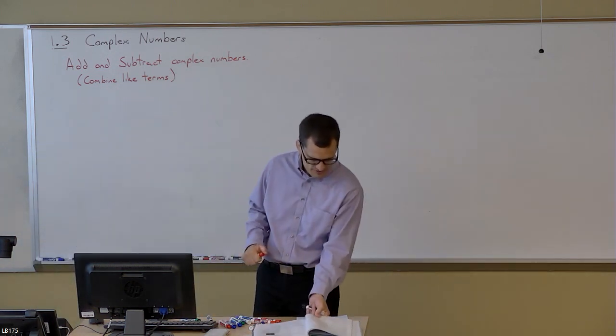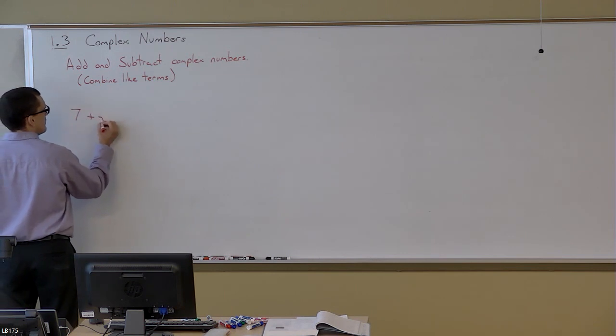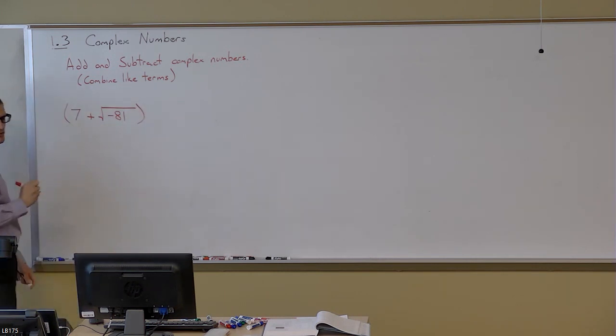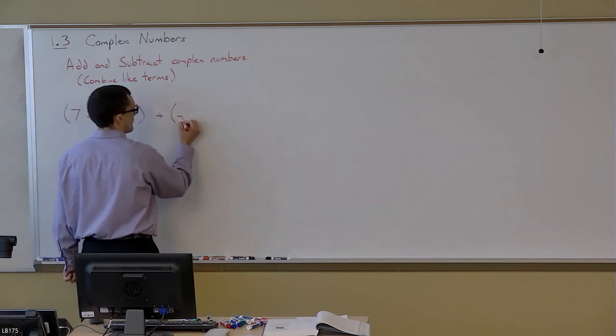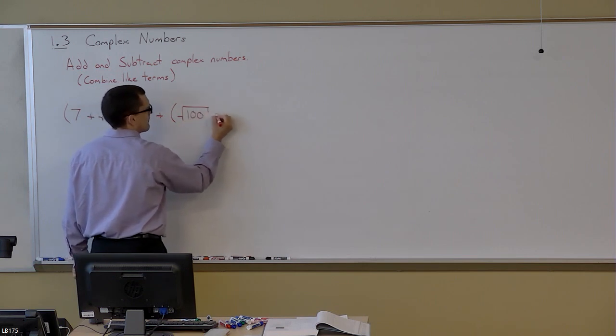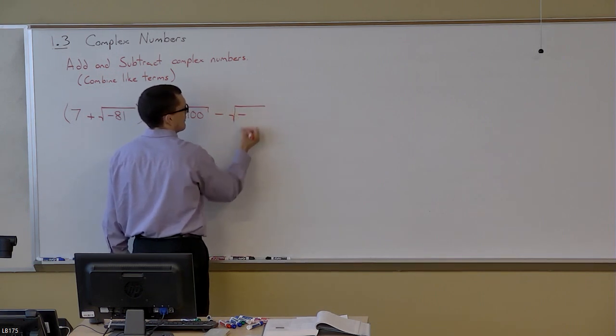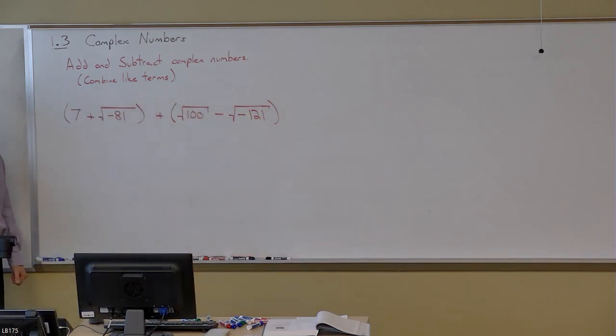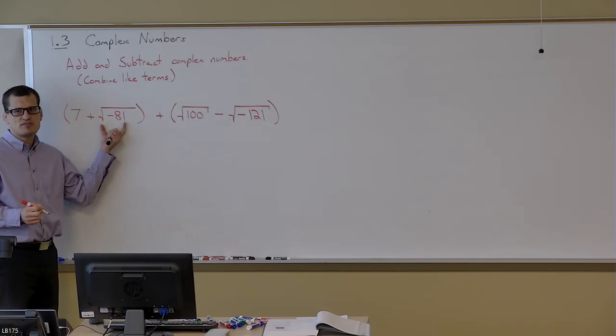The way they get more involved and more steps is that they'll ask you to simplify as you're adding complex numbers up. Take something like 7+√(-81) + √100 - √(-121). And basically, what I have to do before I start adding is that I have to simplify all these square roots.